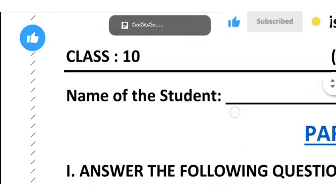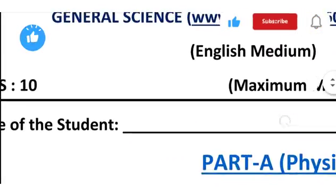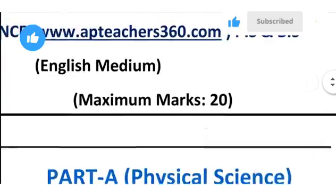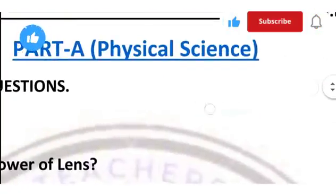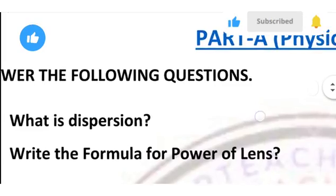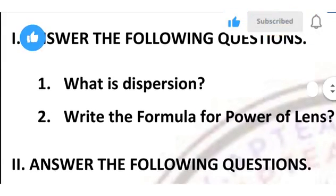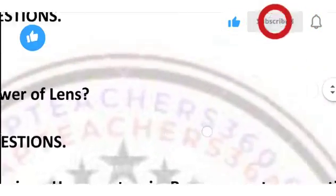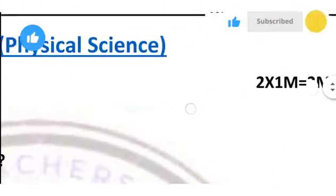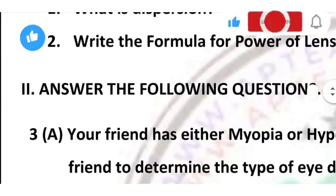For the chosen class, name of student and physical science part. Answer the following questions: what is this person? Write the formula for power of lens.